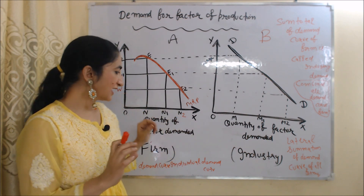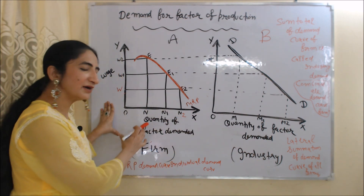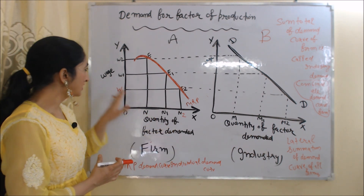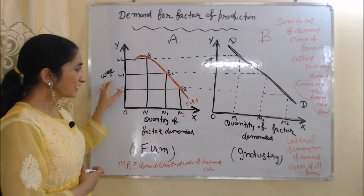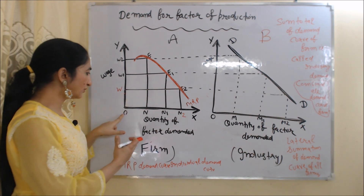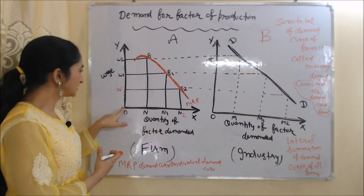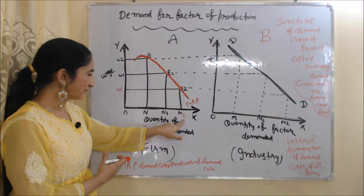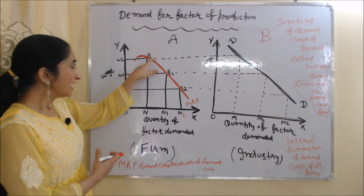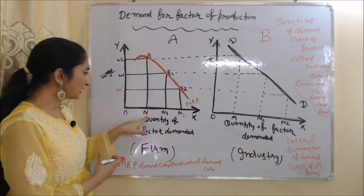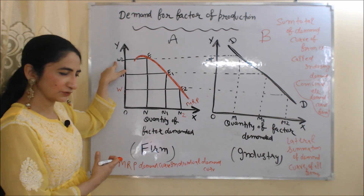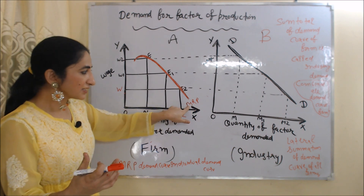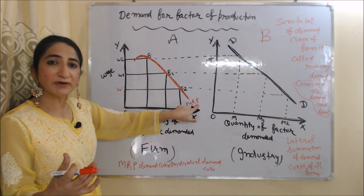Here we have two diagrams. Diagram A represents demand of a factor in a firm. On the x-axis we have quantity of factor demanded, and on the y-axis we have wage rate. At E1 equilibrium point, the firm is employing ON1 labor and wage rate is OW1. At E2 equilibrium point, the firm is employing ON2 labor and wage rate is OW1. At E equilibrium point, the firm is employing ON labor and wage rate is OW2. This MRP is the marginal revenue productivity curve of the firm, and the marginal revenue productivity curve is equal to the demand curve.